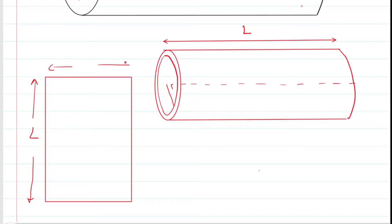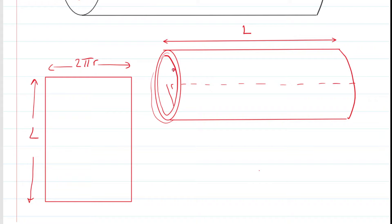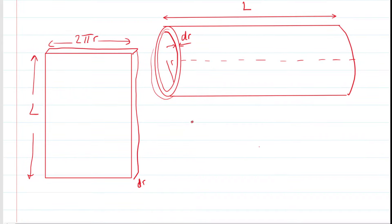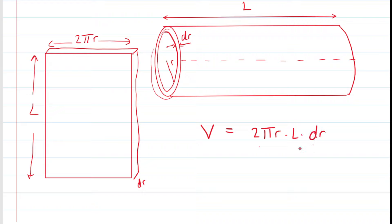After unfolding, one dimension is the length of the cylinder L, and the other dimension is the circumference of the circle, which is 2πr. The tiny thickness of the shell is called dr, using differential notation in calculus for a tiny dimension. The volume of this cylindrical shell — essentially a rectangular prism — is length times width times height: 2πr multiplied by L multiplied by dr.